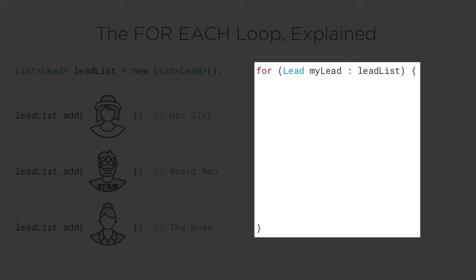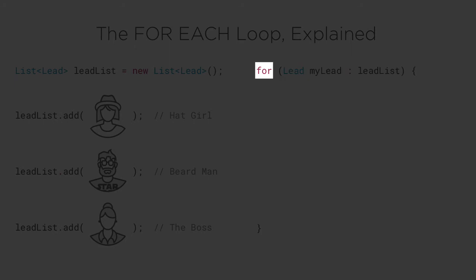This is the syntax. We start with for. Then inside the parentheses, we create a variable. Add a colon. Then we type our collection variable. Finally, we add open and closing brackets to house the code block that runs during each loop iteration.